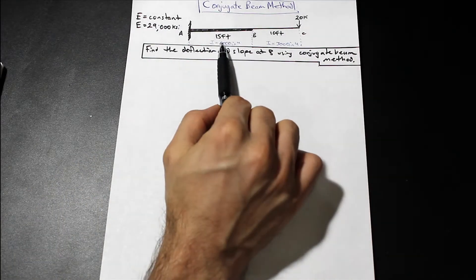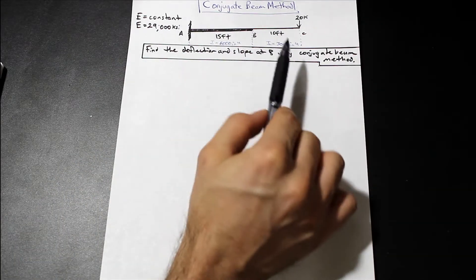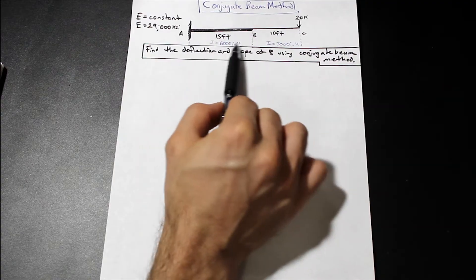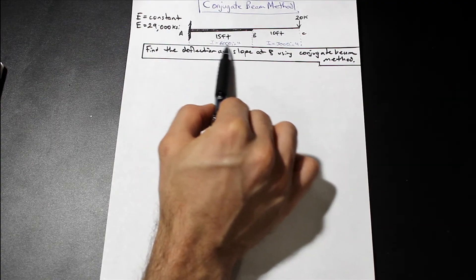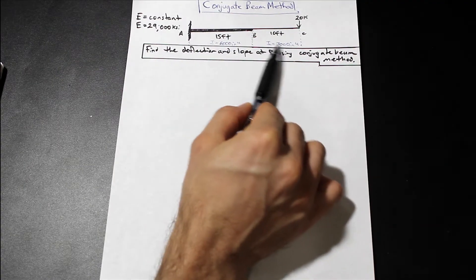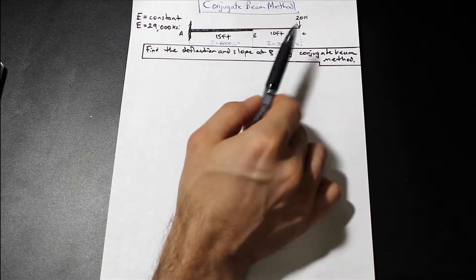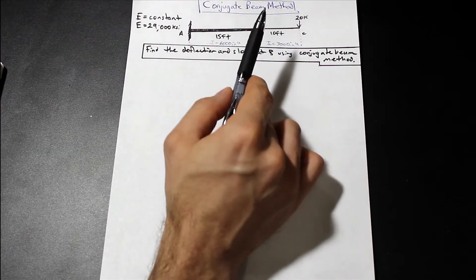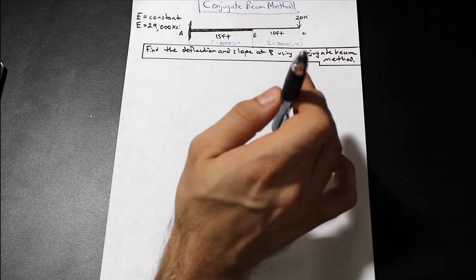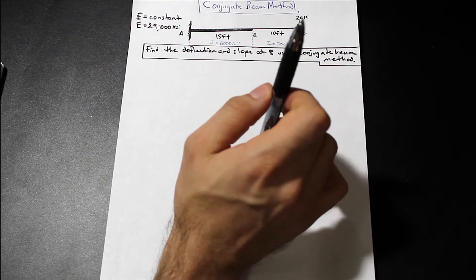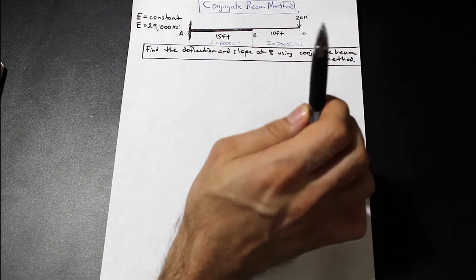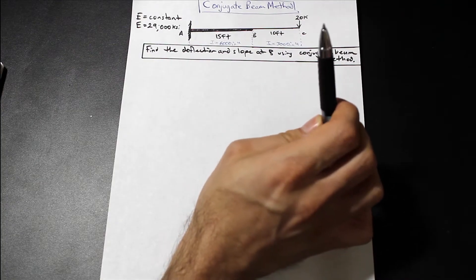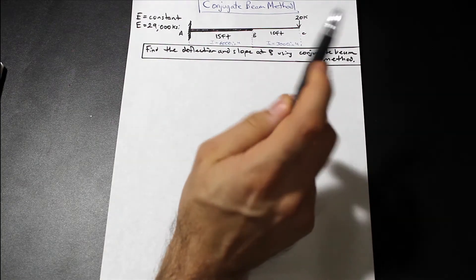Something to note in this problem is we have a non-prismatic beam. We have AB which is 6,000 inches to the fourth moment of inertia, and then half of that for BC. That's going to be a little bit of a trick — something that's going to come up in your test for sure. We're asked to find the deflection and slope at B using the conjugate beam method.